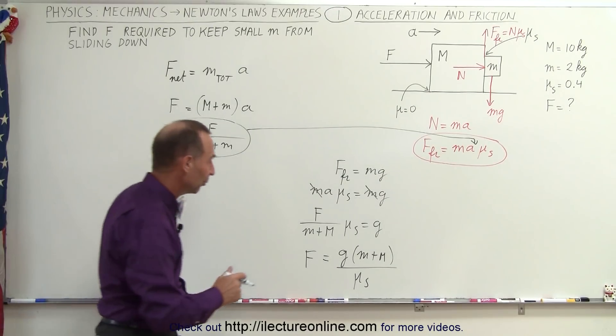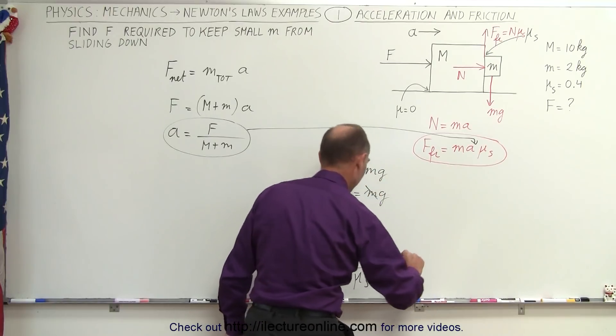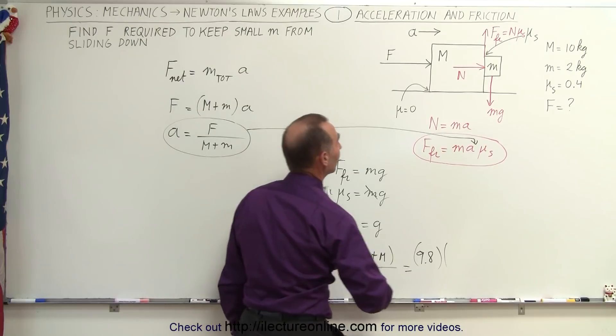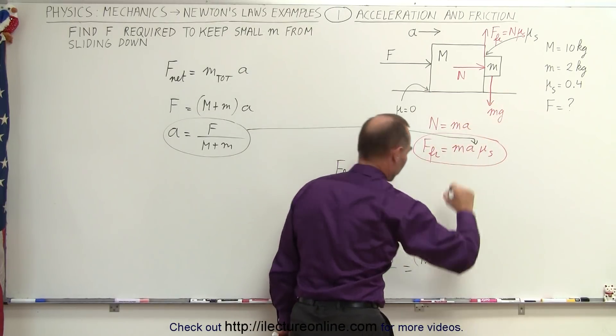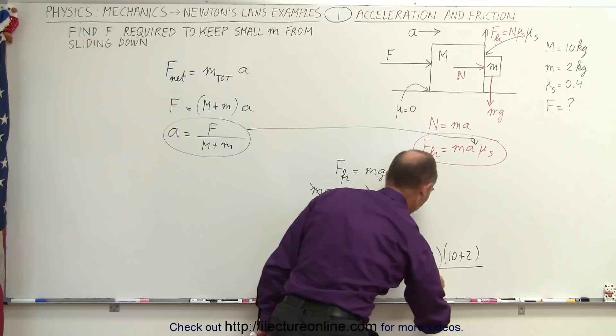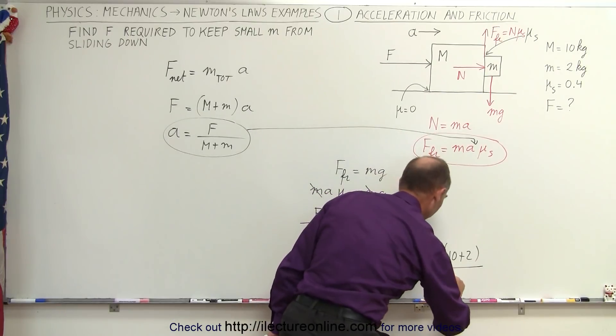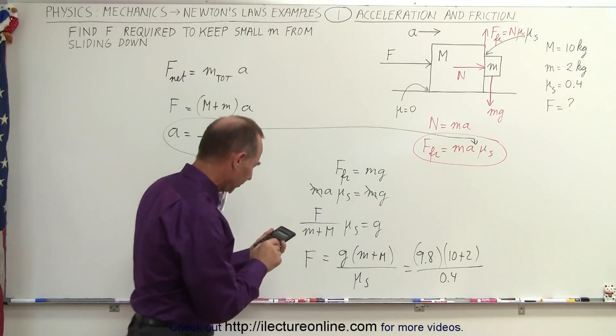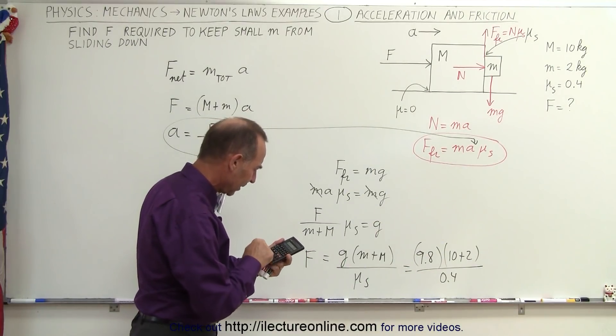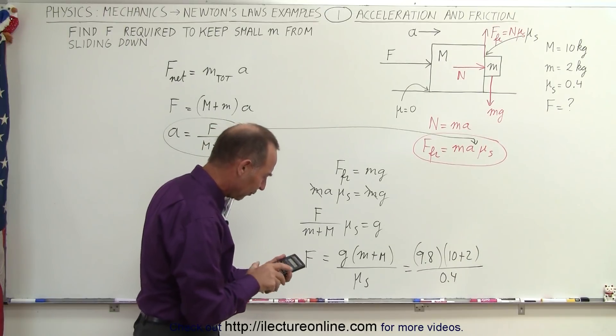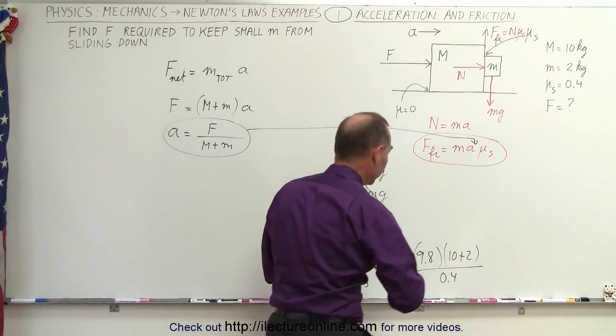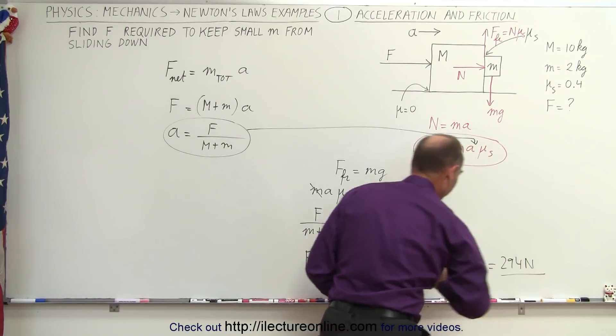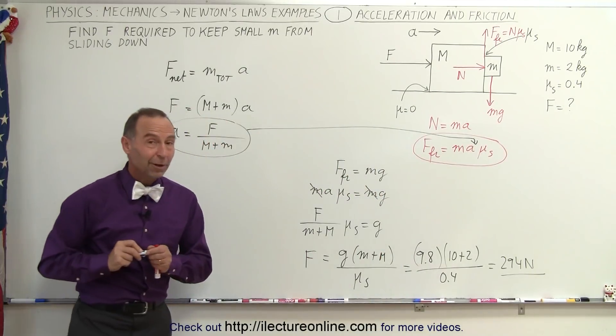Now let's throw in some numbers and see what we actually get numerically. So it would be 9.8 meters per second squared. The sum of their two masses, that would be 10 plus 2 kilograms, and the whole thing divided by mu sub s, which is 0.4. So with a calculator, we can get a numerical value, 9.8 times 12, divided by 0.4. And the force has to be 294 newtons. And that's how we solve a problem like that.